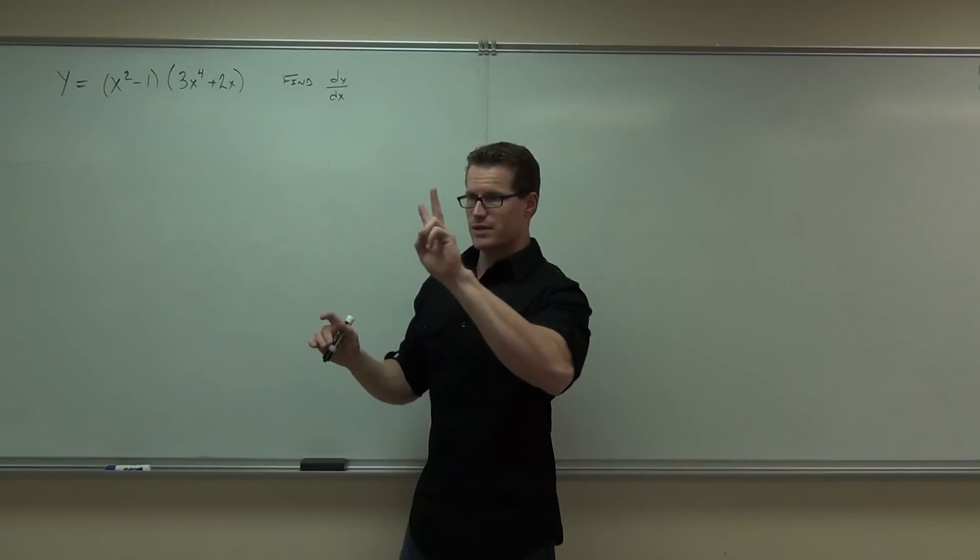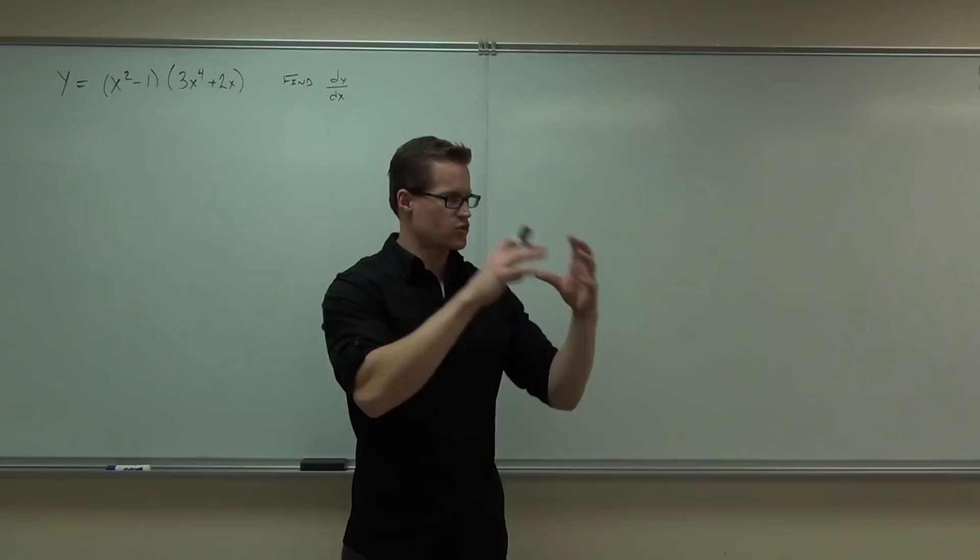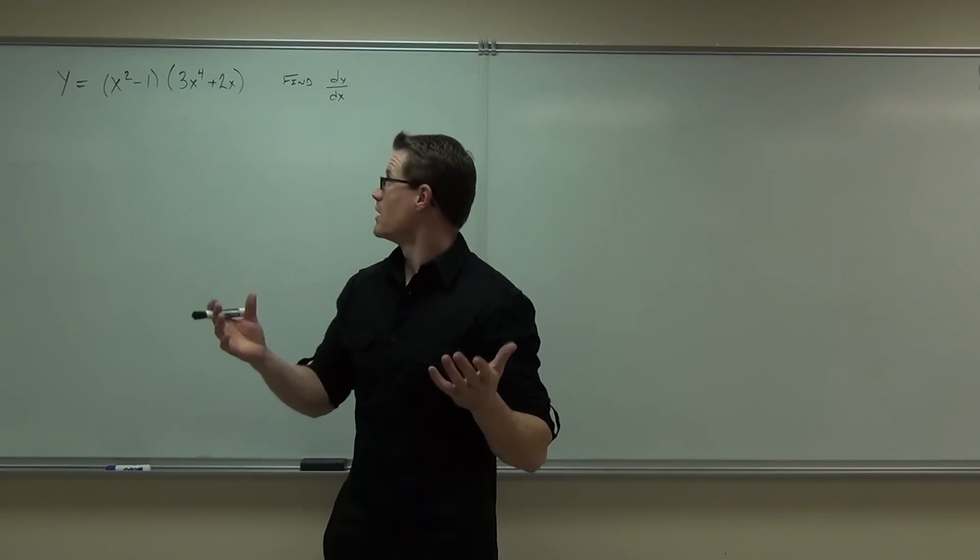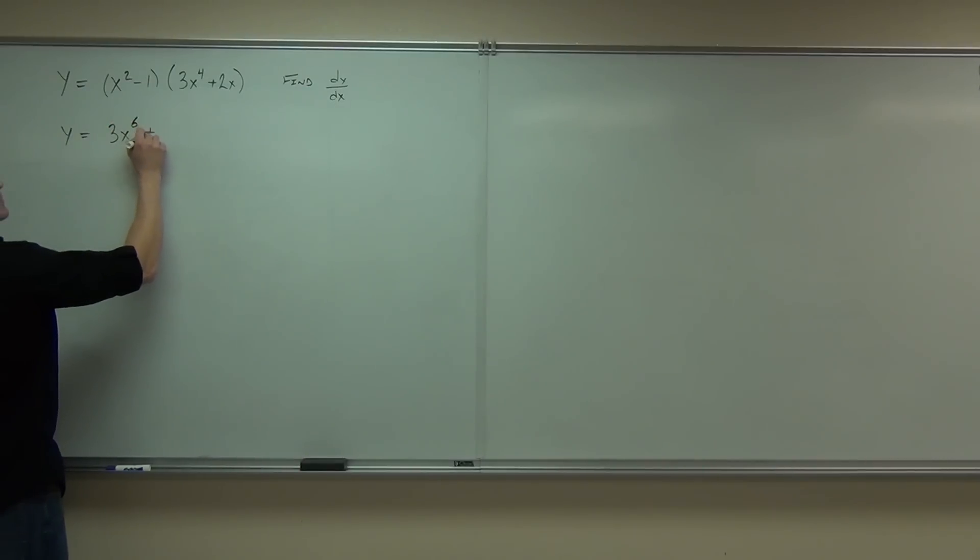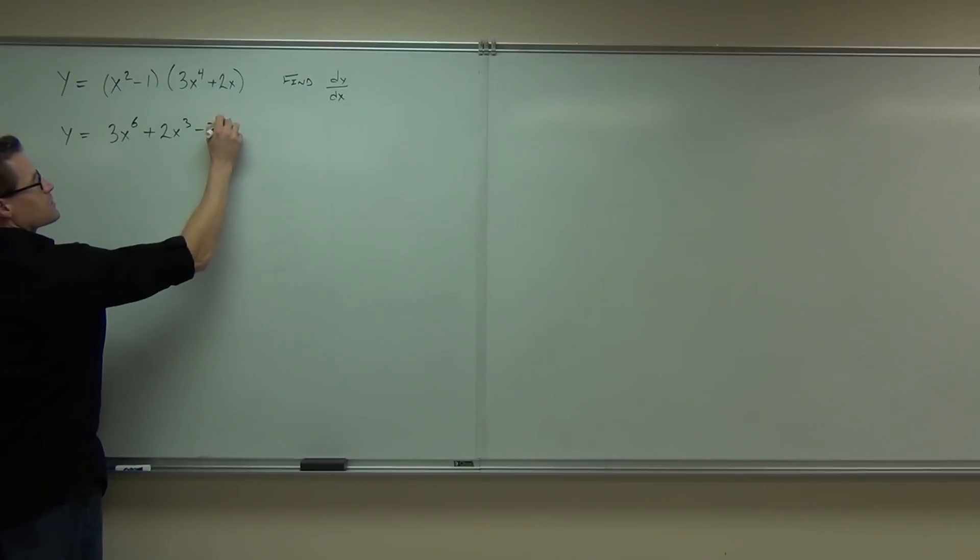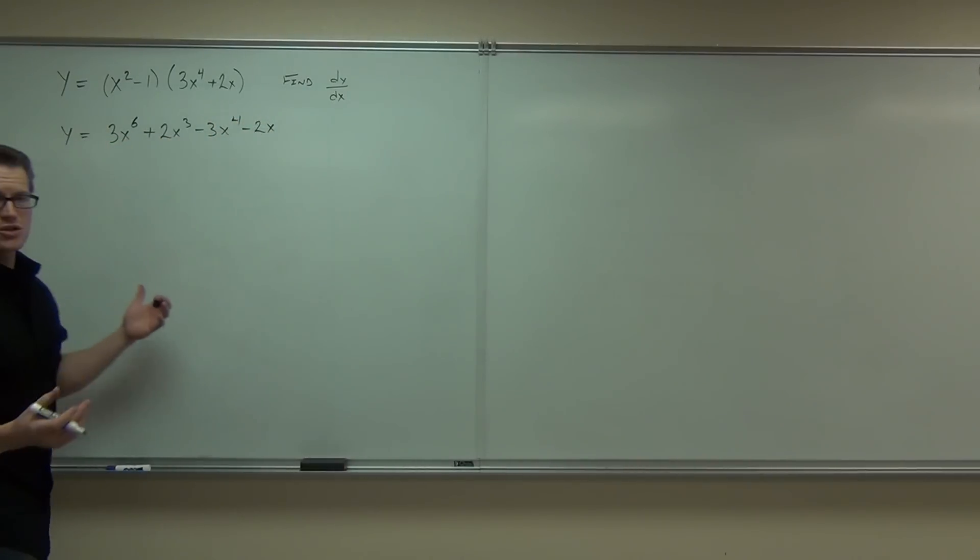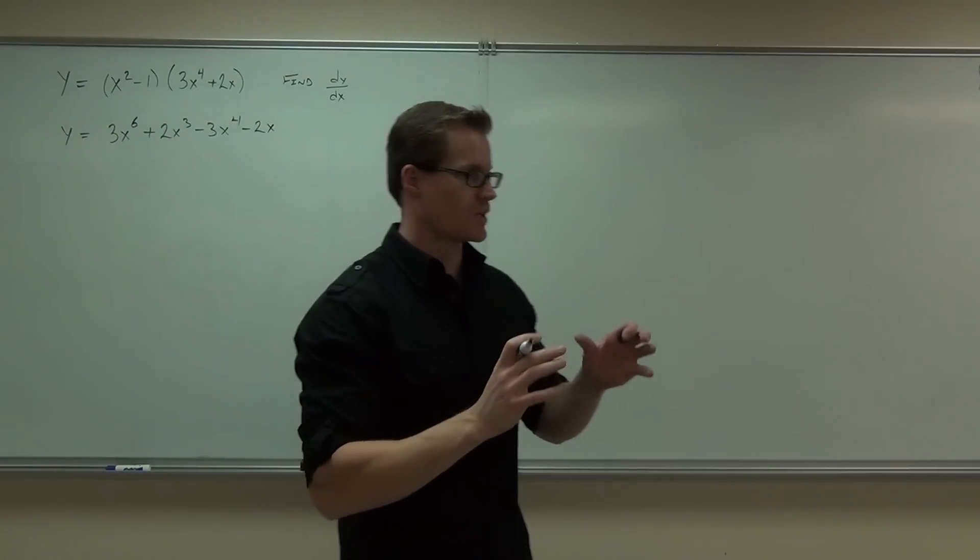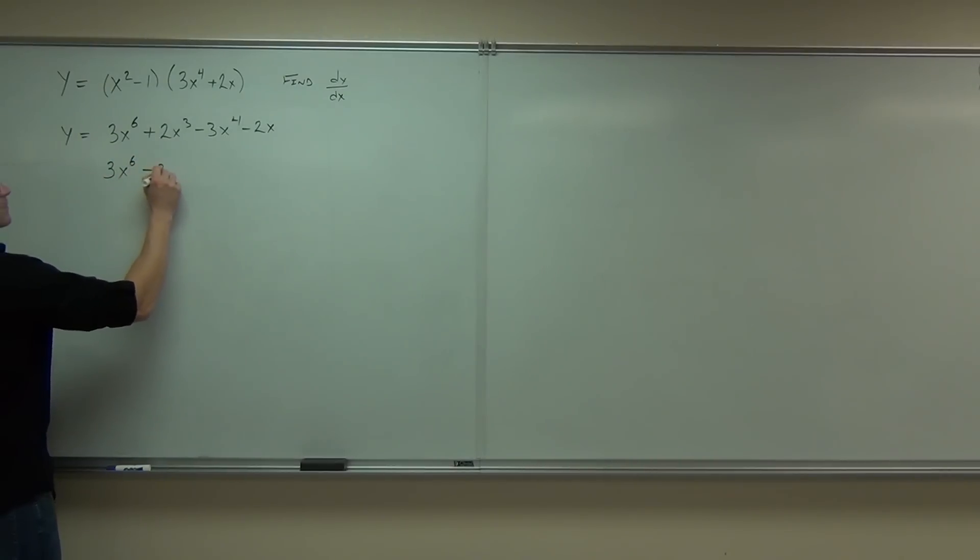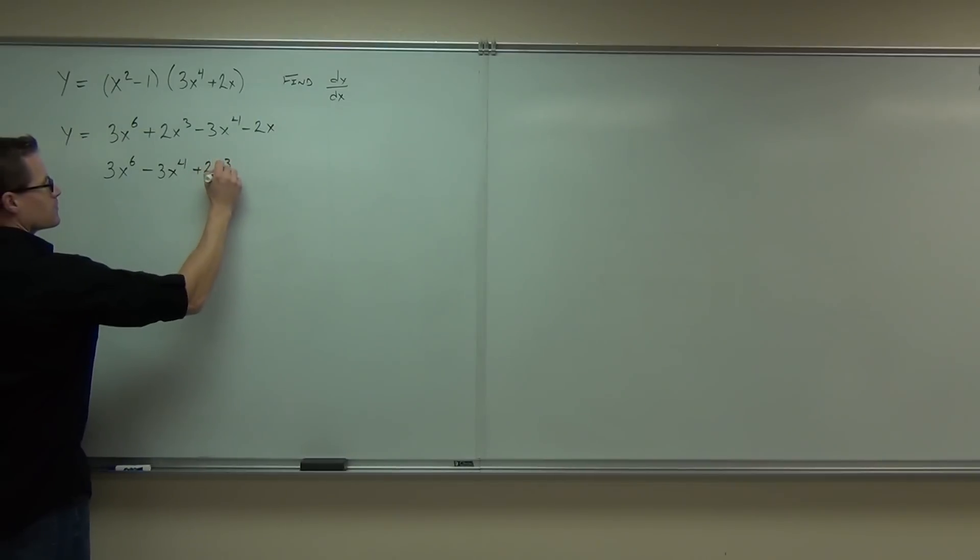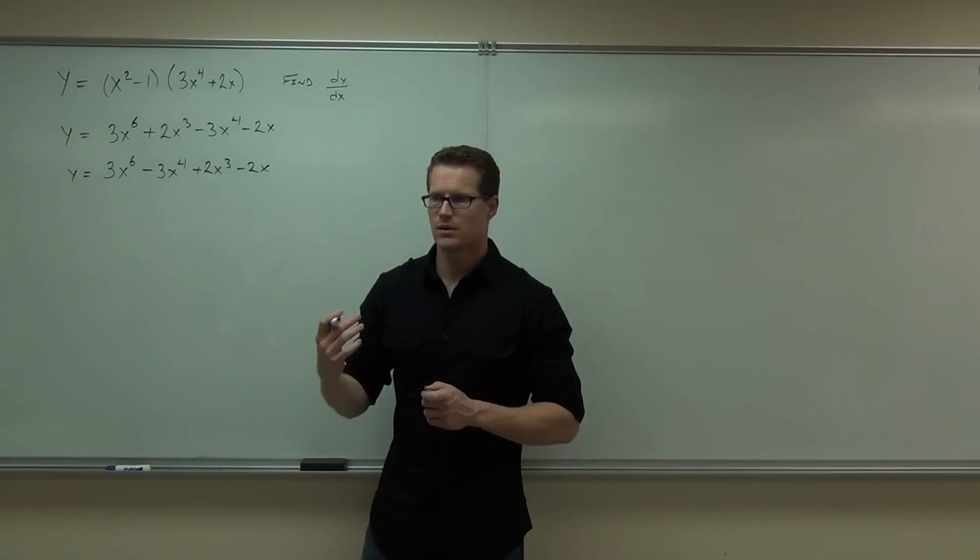So how do we do this two ways? Well, way number one is what if we don't even consider it to be a product at the very end? What if we distribute those parentheses and make it so we just have a basic polynomial in this case? Well if we do that, we'll get 3x⁶ + 2x³ - 3x⁴ - 2x. Are you okay with that so far? Check for any like terms. Do I have any like terms? So maybe reorganize it just a little bit.